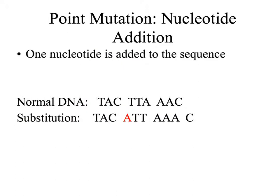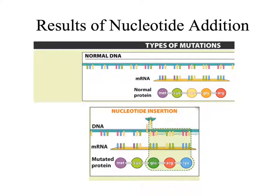Another type of point mutation is nucleotide addition or insertion. This is when one nucleotide is added to the sequence. Here we have a normal strand of DNA, and we see that one nucleotide — the red A — has been added. Nucleotide insertions often cause more changes in the protein than a substitution does. With the insertion of one nucleotide, there are actually several changes in the protein structure. This is a result of a frameshift mutation.